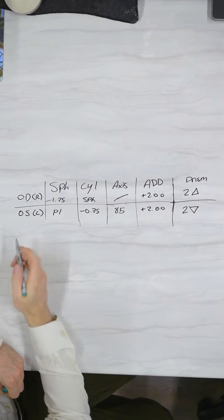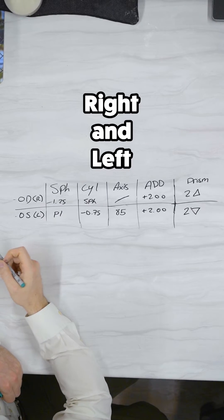The first thing that you're going to see on the prescription is an OD and an OS. These are known as Oculus Dexter and Oculus Sinister. Simply put, right and left.